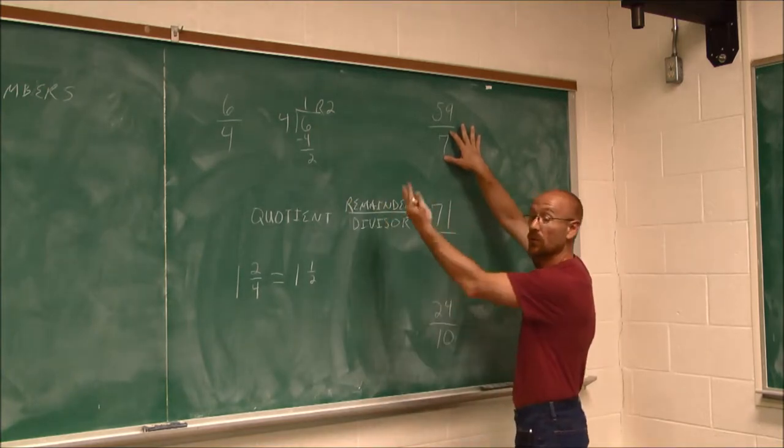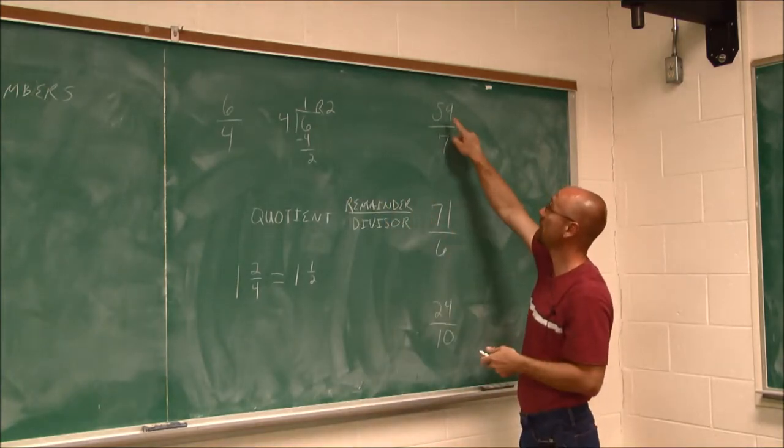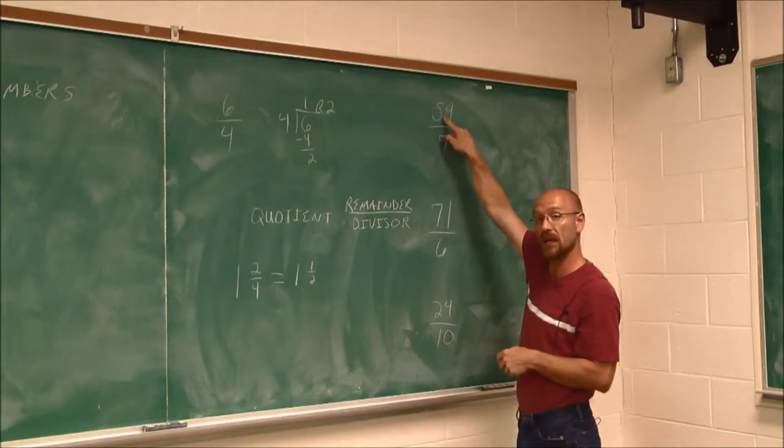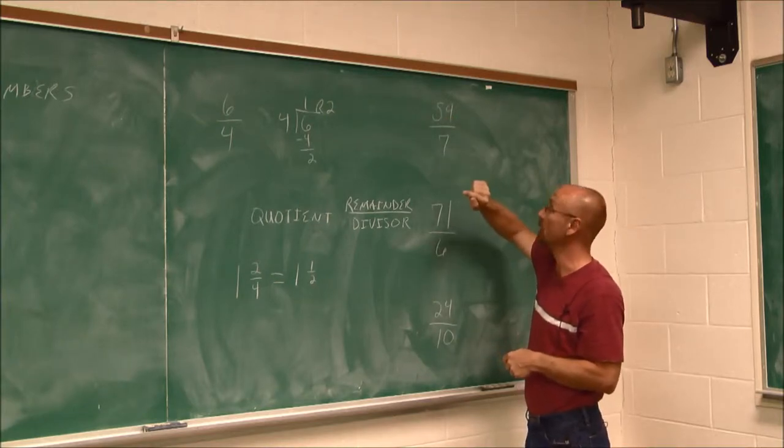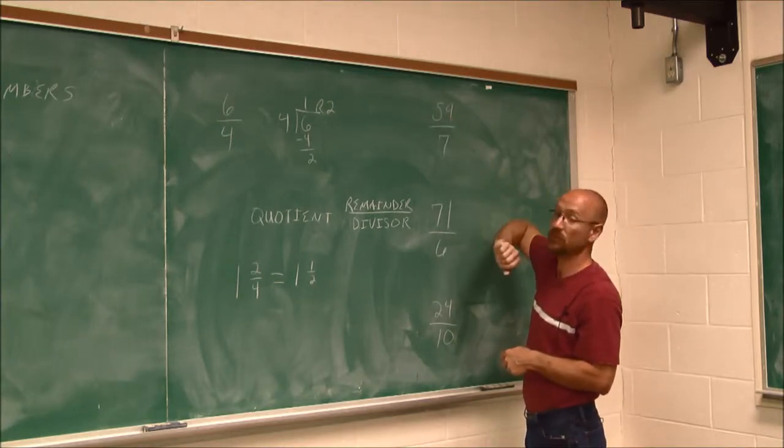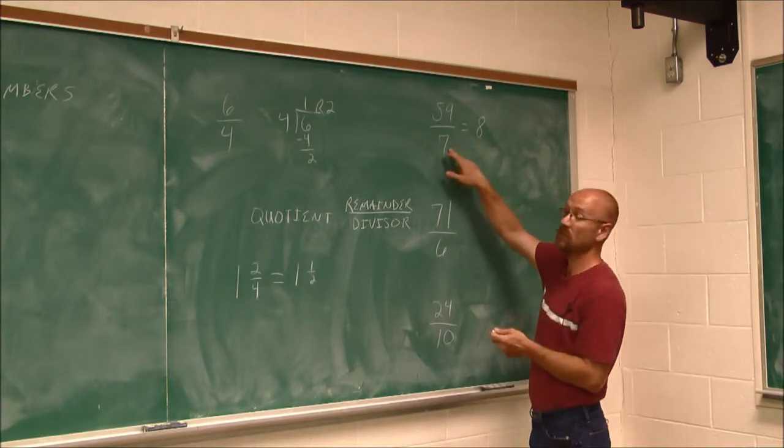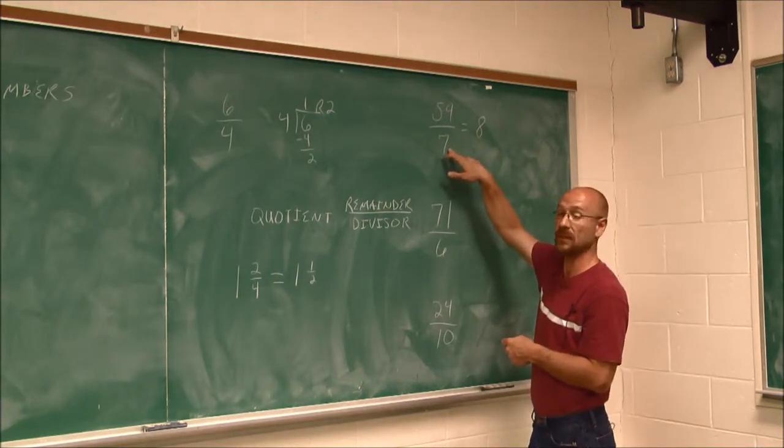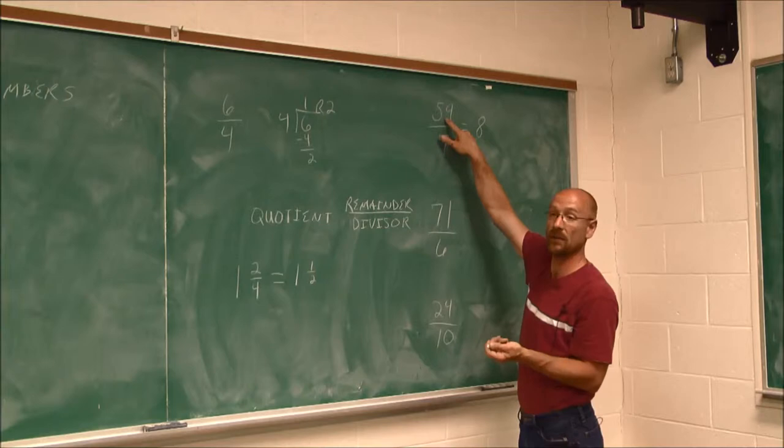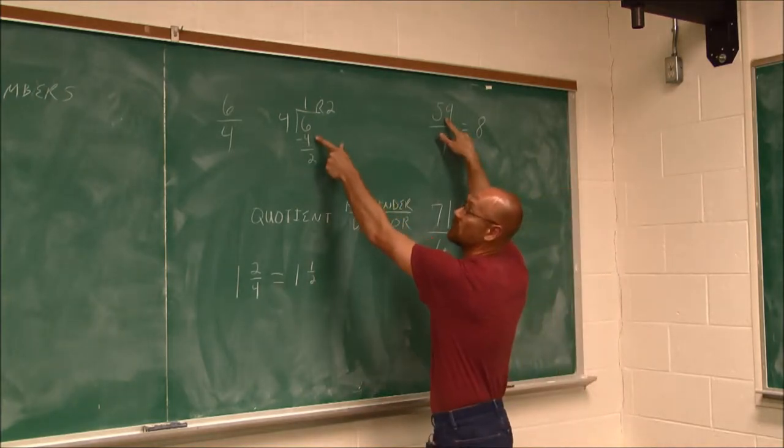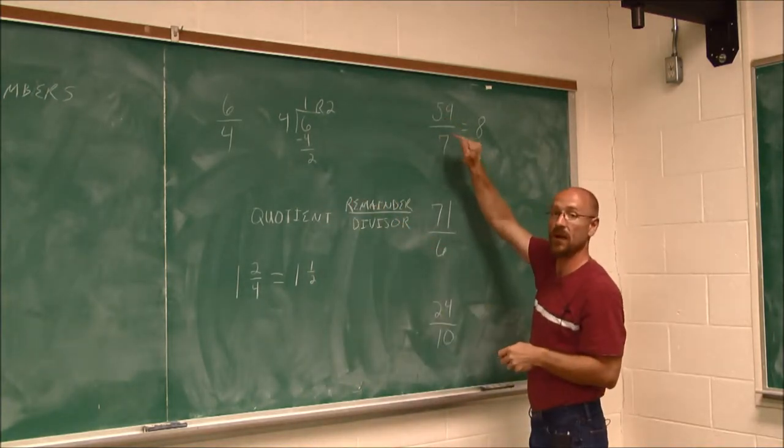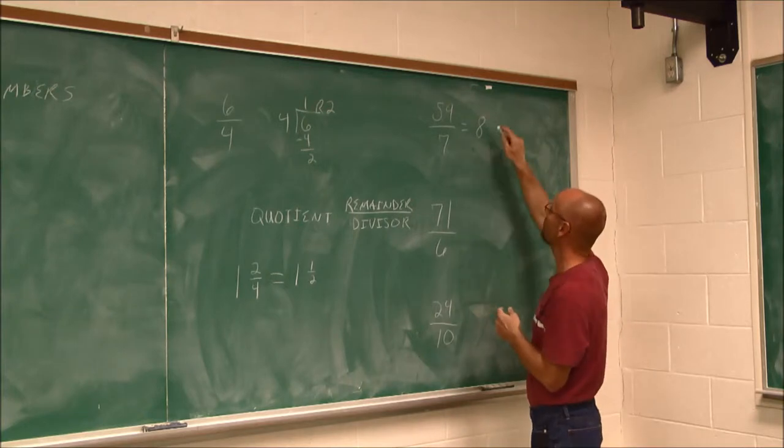What times 7 will get me close to 59 without going over? Well, 7 goes into 59 eight times. So I know that my whole number is 8. Well, 8 times 7 is 56. And then I just find their difference, just like I found the difference here. 59 minus 56 is 3. So I have 8 and 3 sevenths.